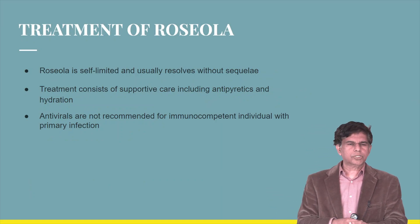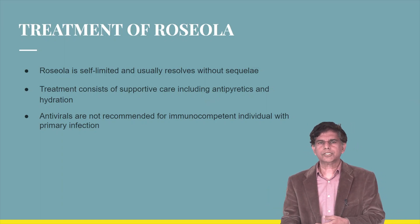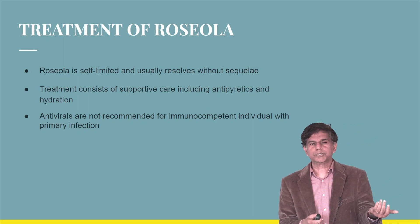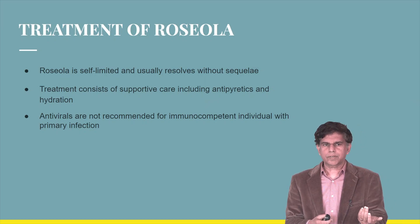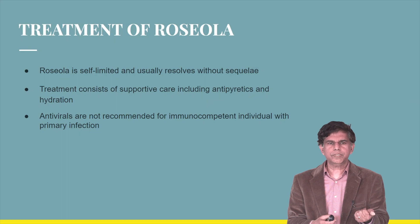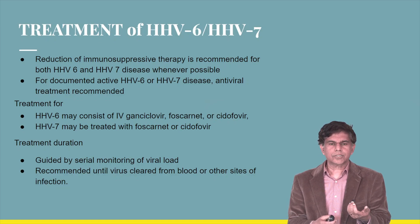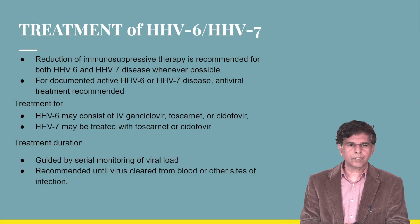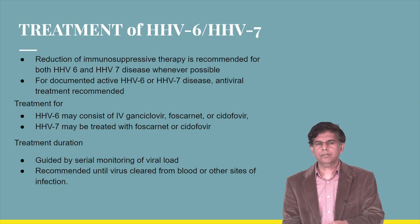Roseola usually resolves on its own. Most of the time it's asymptomatic and supportive care — hydration and antipyretics — is sufficient. In immunosuppressed patients or organ transplant recipients, antiviral treatment is indicated. For HHV-6, you can use ganciclovir, foscarnet, or cidofovir. For HHV-7, foscarnet or cidofovir can be used. Treatment duration is guided by serial viral load monitoring, until the virus is completely cleared from the blood.